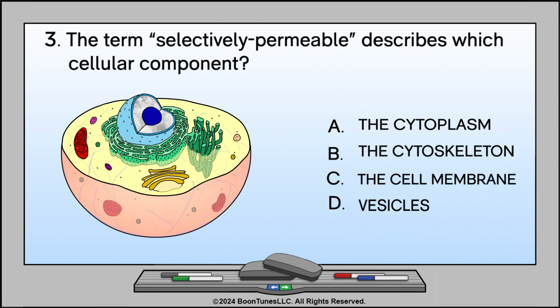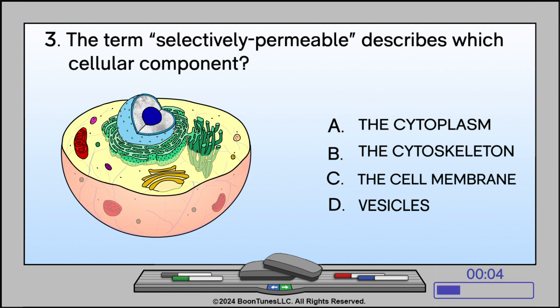The term selectively permeable describes which cellular component? A. The cytoplasm, B. The cytoskeleton, C. The cell membrane, or D. Vesicles? The answer is C. The cell membrane.